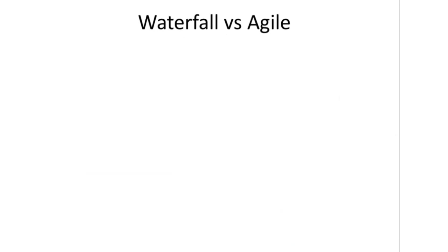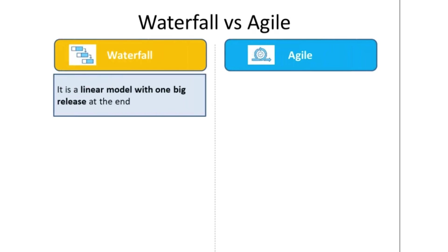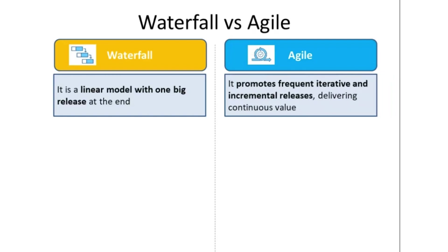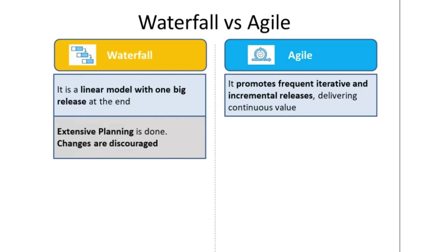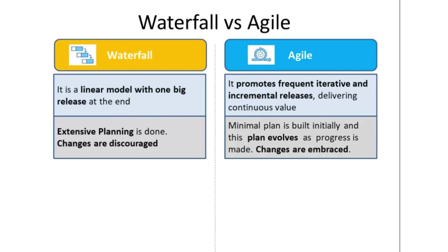Now that we have a better understanding of both Agile and Waterfall, let's cover the differences between them. Waterfall is a linear and sequential model with one big bang release at the end, whereas Agile believes in continuous delivery through iterative and incremental releases. In Waterfall, extensive planning is done at the start and the plan and scope remain fixed throughout. In Agile, a minimal plan is prepared at the start and this plan evolves as more clarity comes in the form of feedback received.